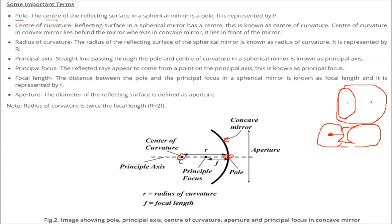What is the principal axis? From this point to this point is R — we are talking about the radius of curvature. The principal axis is the straight line passing through the pole and the center of curvature. For both concave and convex mirrors, the line passing through the pole and the center of curvature is known as the principal axis. In this figure, the dotted black line is the principal axis.